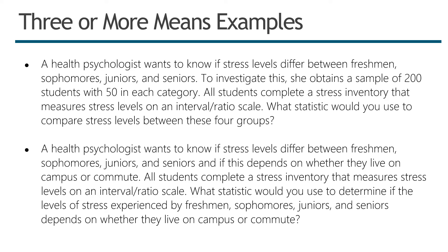We can contrast that to an example where the health psychologist wants to know if stress levels differ between freshmen, sophomores, juniors, and seniors, and whether this depends on whether they live on campus or commute. Here we have two separate independent variables: year in school with four levels and where students live with two levels. Because we have two separate variables, we're going to do a two-way ANOVA, also called a two-factor ANOVA.